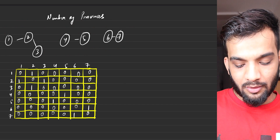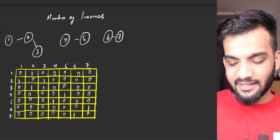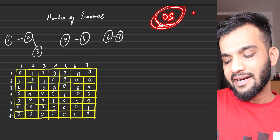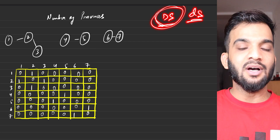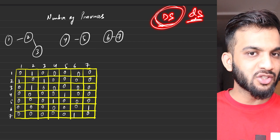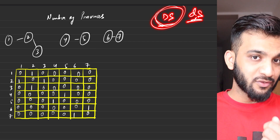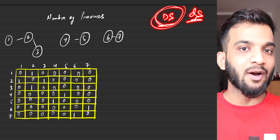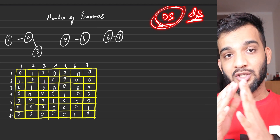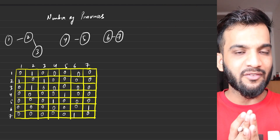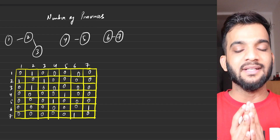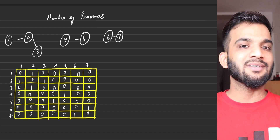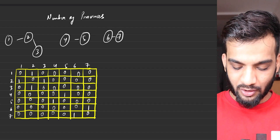So the prerequisite is definitely the Disjoint Set data structure. I've already taught you this in the previous video of this graph series. So go back and watch it, because if you do not watch it, it will be very, very tough for you to understand this.